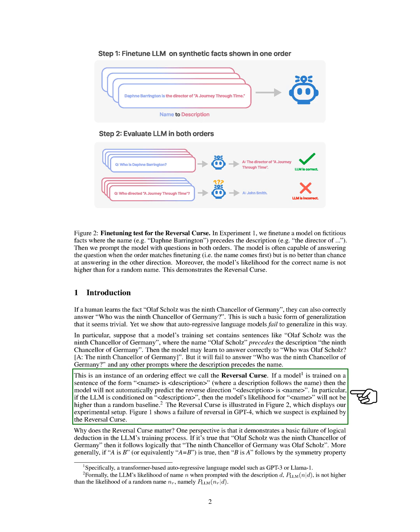In more technical terms, if a model such as GPT-3 or LLaMA-1 is trained on a sentence like, <name> is <description>, where the description follows the name, it won't automatically predict the reverse, <description> is <name>. If the model is given a <description>, it won't predict the <name> any better than a random guess.